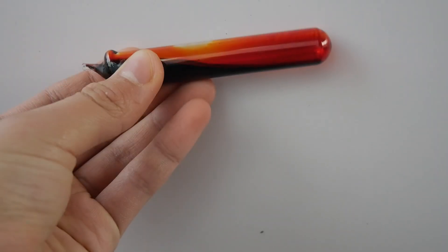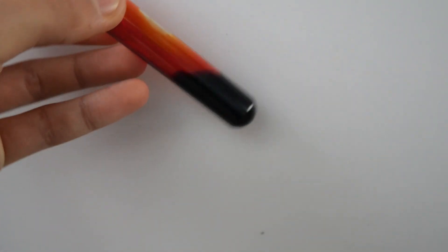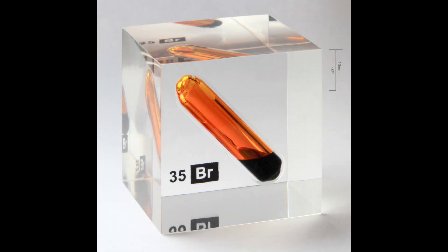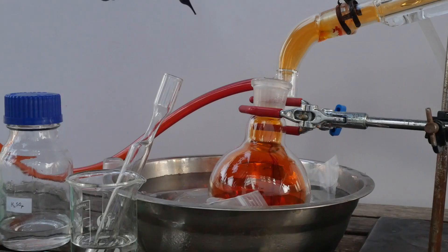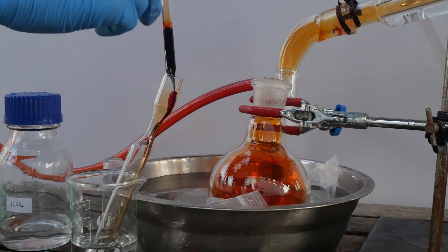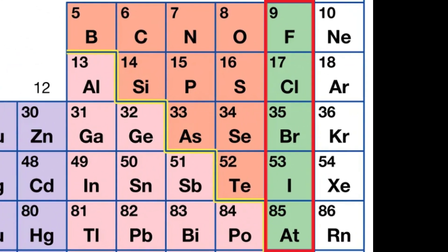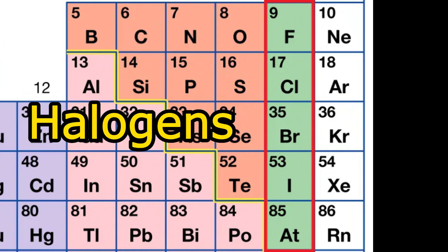Hey guys, welcome to my channel. Today I'm going to show you guys how to make elemental bromine. Bromine is a very interesting element — it's a blood red liquid that gives off orange fumes at room temperature. It belongs to group 17 in the periodic table, or the halogens, which means it's reactive and deadly.